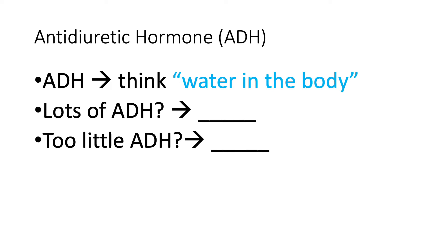This slide is critical for you to make sense of disorders with ADH. Antidiuretic hormone basically results in a process of antidiuresis — anti-urination, or less urination — and that results in more water staying in the body rather than being diuresed or leaving the body. An easier way to remember this is: ADH means water in the body.